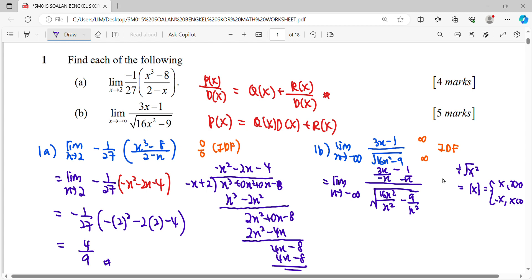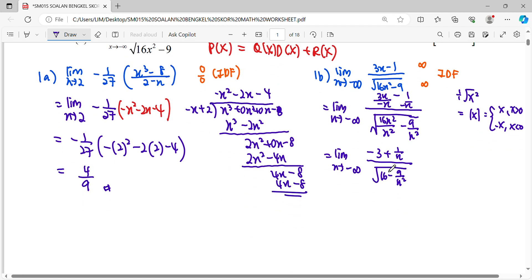Whether your negative is outside already factorized out or together with x, let's only simplify this. Then substitute your infinity: one over infinity is zero, square root nine over infinity also zero.